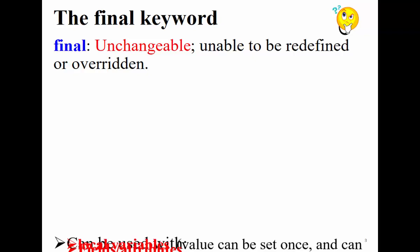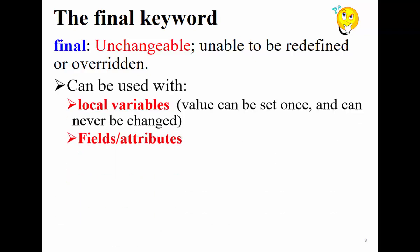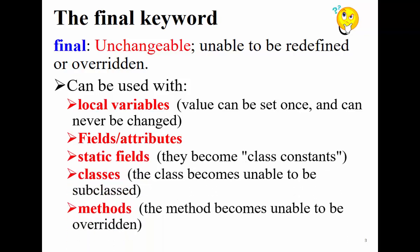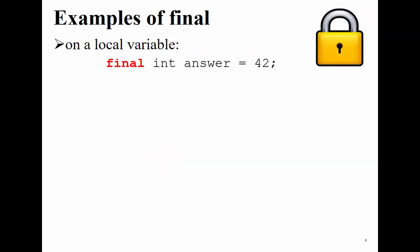You can use final with a local variable, with a field or attribute, and with static fields — in which case it becomes a class-level constant. You can also use final with a class, meaning you cannot extend that class and cannot create a child from it. We'll revisit this concept when we cover inheritance. You can also use final with a method — once a method is final, you cannot override it in a child class.